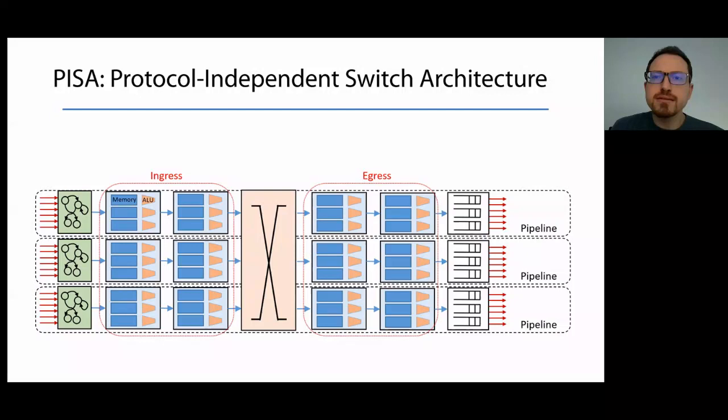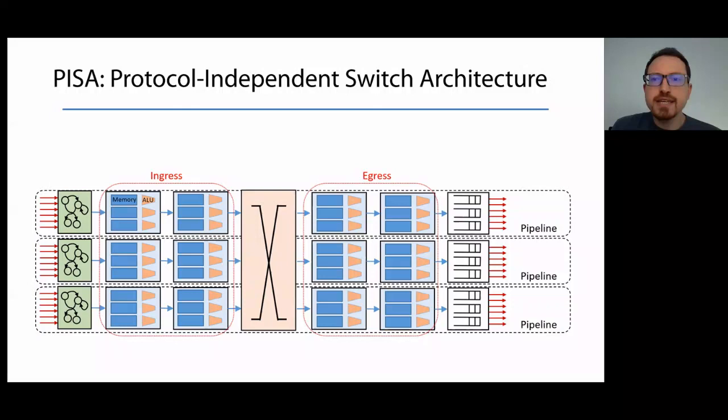The PISA architecture is made of multiple pipelines that can process packets in a way that the hardware can reach line rate at terabits per second. I'm showing here three pipelines, because of space limits, but typically ASICs have four or eight of these pipelines. Every pipeline manages traffic in and out of a set of switch ports, and is composed of a programmable parser, multiple stages of match-action units, and a programmable deparser.